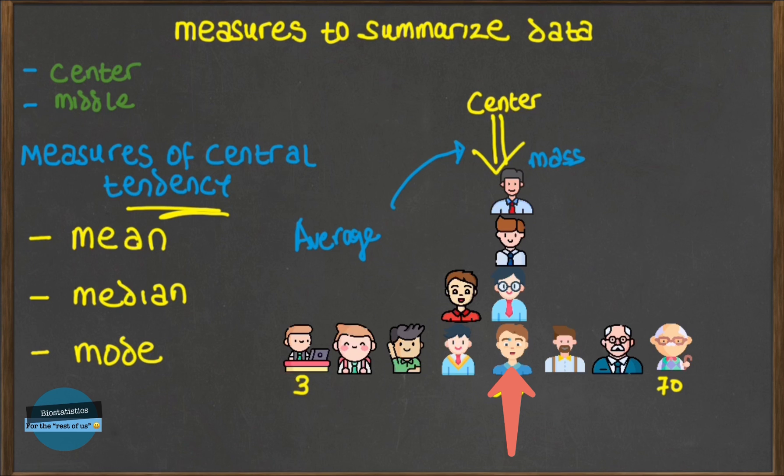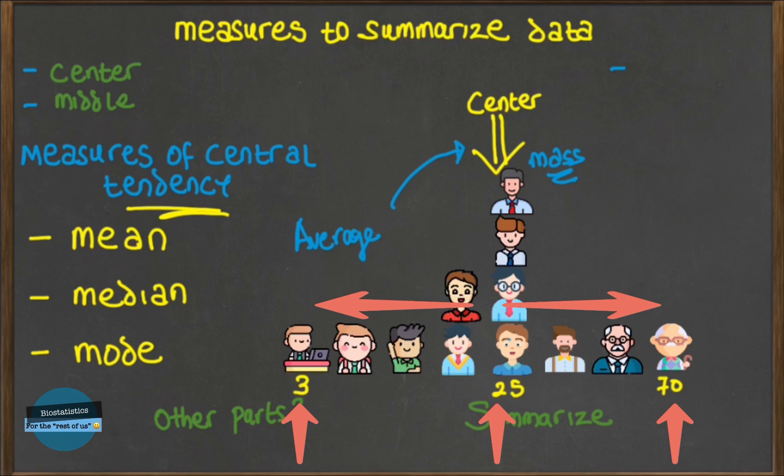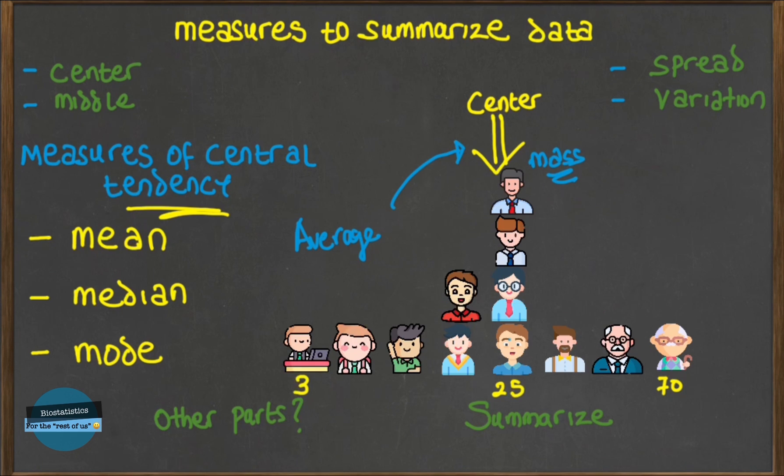Now while these measures—the mean, median, and mode—give us very useful information about the center, that's not the whole story about the data. What about other parts of the data? Are we only just going to concentrate at the center? Are we just going to neglect this young chap or we're going to neglect the elderly guy? So a good summary of data will not just talk about the center, that central location, but it will also add how far other values are from the center, meaning how spread out they are.